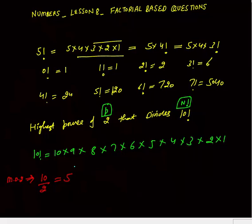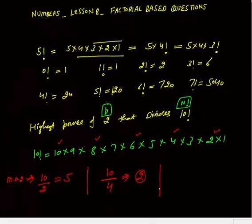Multiples of 2: that is 10 divided by 2, which gives 5. So 5 multiples of 2 are there — that is 2, 4, 6, 8, and 10 — each contributing at least one 2. So the count of 2's so far is 5. Next, in multiples of 4 we find extra 2's. 10 divided by 4 gives quotient 2, so 2 multiples of 4 are there with extra 2's — for example, 4 has two 2's and 8 has three 2's.